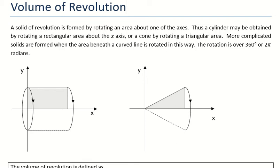In this video we're going to look at volume of revolution. Now the volume of revolution is when you have a solid, a three-dimensional solid, which is formed by rotating a shape around the x-axis by 360 degrees.